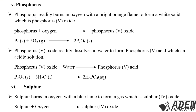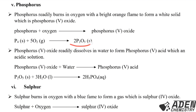The fifth element is phosphorus. Phosphorus readily burns in oxygen with a bright orange flame to form a white solid which is phosphorus(V) oxide. The word equation: phosphorus plus oxygen gives phosphorus(V) oxide. The balanced chemical equation: P₄ (solid) reacts with five moles of oxygen gas giving two moles of phosphorus(V) oxide (P₄O₁₀).